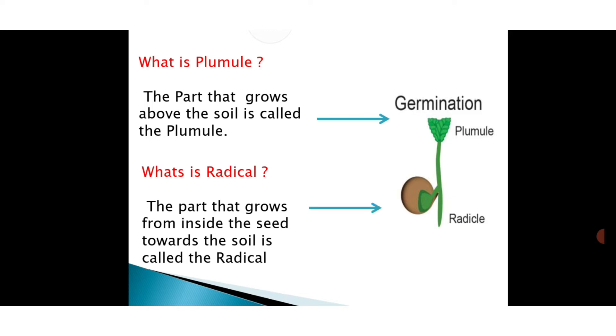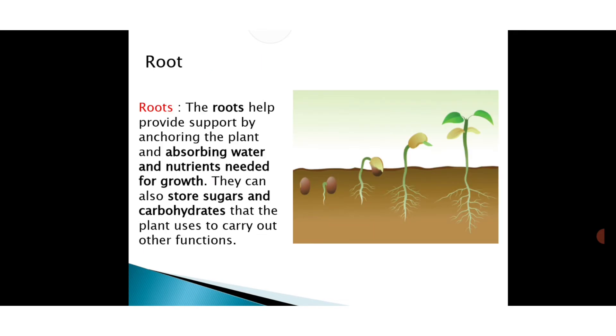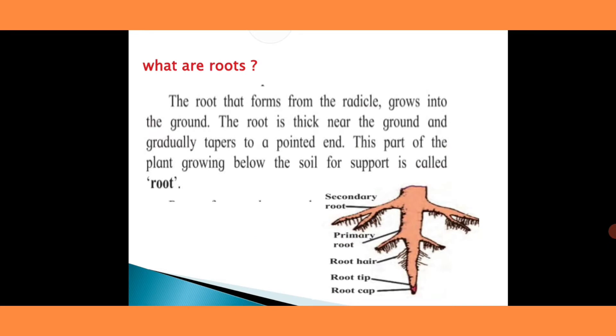In today's video we will study about root, the function of root, and parts of root. What are roots? The root that forms from the radical grows into the ground. The root is thick near the ground and gradually tapers to a pointed end. This part of the plant growing below the soil for support is called root.